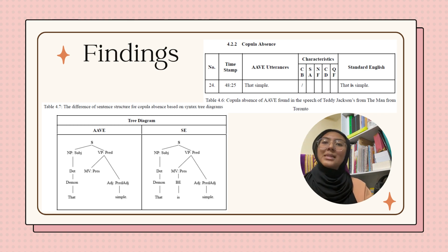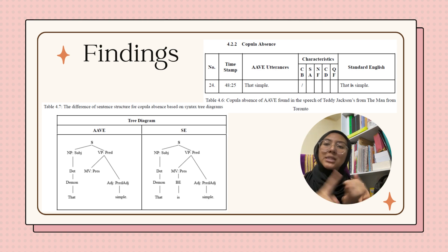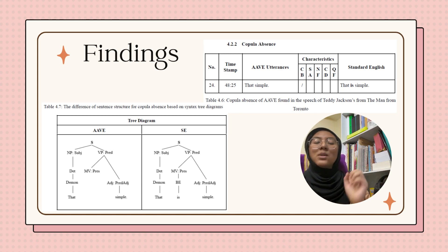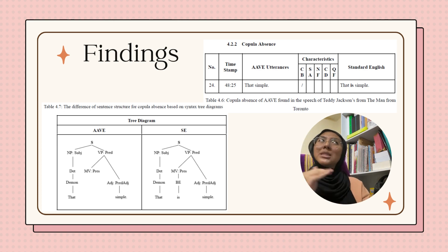On the other hand, standard English applies the correct syntactic structure to make the sentence logical with the existence of subject, verb, and object. In this instance, the BE verb 'was' is shown to fill in the missing part in the AAVE sentence that omitted the copula BE.